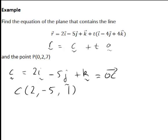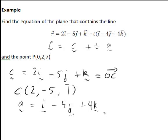Vector a in the line equation is i minus 4j plus 4k. This is a vector in the direction of the line, and that vector is also in one of the directions of the plane, so we can think of it as lying on the plane.